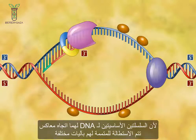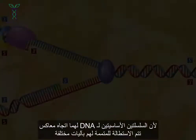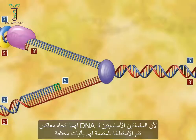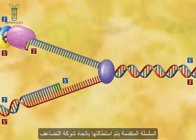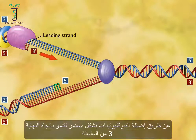Because the two parent strands of DNA are anti-parallel, they are oriented in opposite directions and must therefore be elongated by different mechanisms. The leading strand elongates toward the replication fork by adding nucleotides continuously to its growing 3' end.